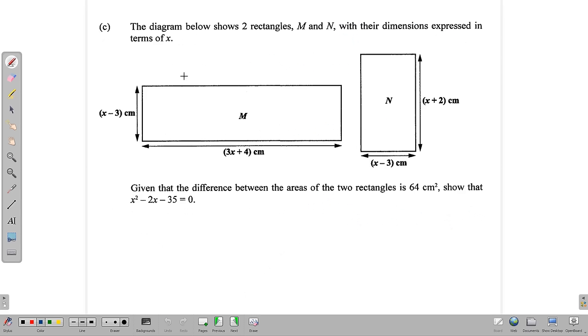Next, we have this situation here at C. It says the diagram below shows two rectangles, M and N, with their dimensions expressed in terms of x. So we have a length and a width, length and a width. And it says given that the difference between the areas of the two rectangles is 64 centimeters, show that x squared minus 2x minus 35 is equal to zero.